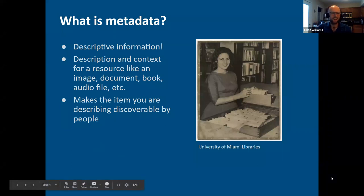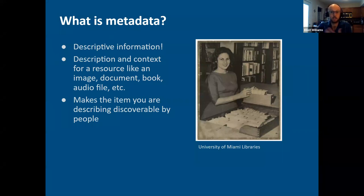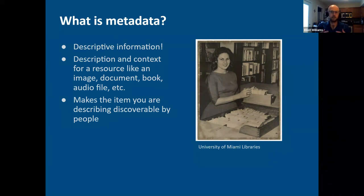So what is metadata? In this context, it's descriptive information about something — and that something can be really anything: a book, an image, a document, an audio file, a museum object. Anything you can describe can have metadata. Another definition I like from Stephen Miller's Metadata for Digital Collections is data or information that enables people to perform certain functions. The metadata should be useful — it should let people find, use, and access the item. That's what we're really talking about: how can we make an item discoverable.